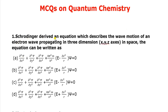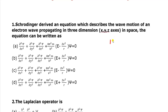Question 1: Schrödinger derived an equation which describes the wave motion of an electron wave propagating in three dimensions in space. The equation can be written as the Schrödinger wave equation. In the simple case, the Hamiltonian operator has one wave function: H-cap times psi equals energy value times psi. Here, H-cap is the Hamiltonian operator and psi is the wave function.